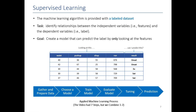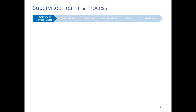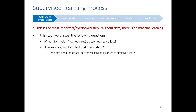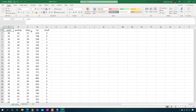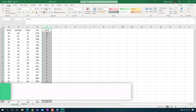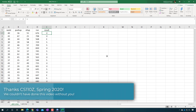The first step in the machine learning process is gathering and preparing your data. It seems trivial but it's actually the most important and most overlooked step — without data you don't have machine learning. We need to figure out what information to collect and how to collect it. For this video, I got a random sampling of Air Force fitness test scores and then had CS 110 students go and manually label each score as unsat, excellent, or satisfactory.